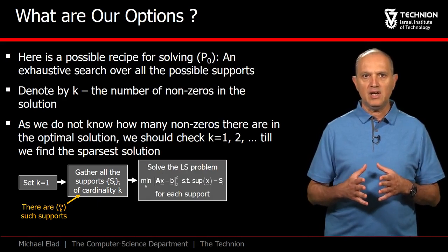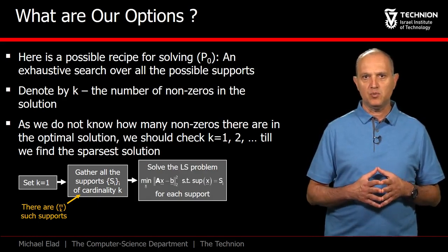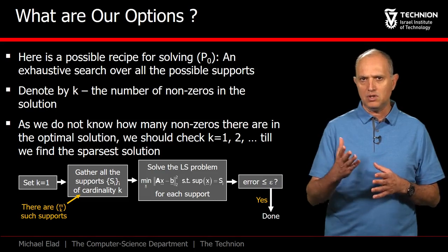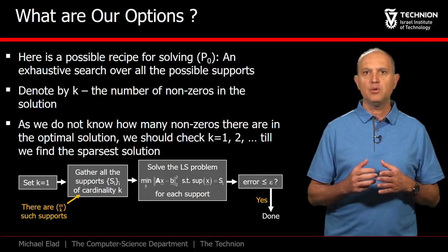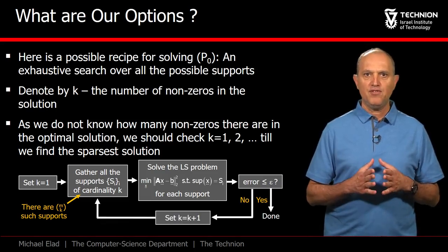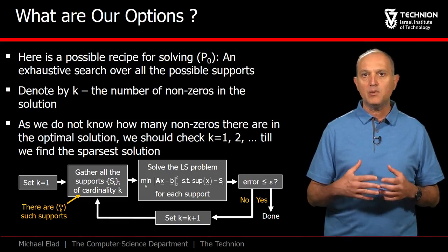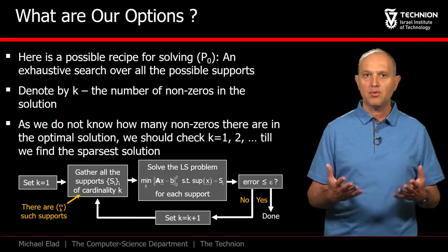The test shown here solves a least squares problem over the chosen support. And if the error is zero, or just small enough, we decide that a solution has been found. If none of these tests is successful, we increase k by 1 and repeat the process.